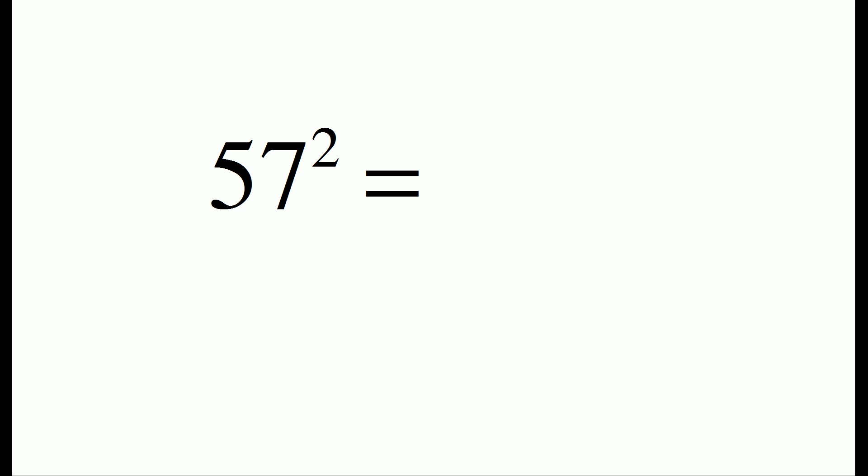Let's start out with 57 squared. The trick involves two steps. The first step is to square the unit's digit. In 57 squared, the unit's digit is 7, and squaring 7 gets us 49.